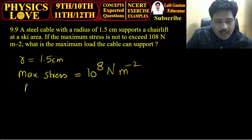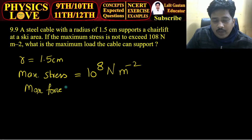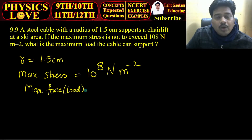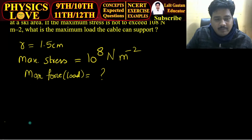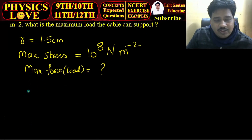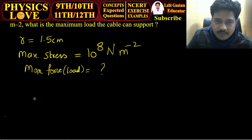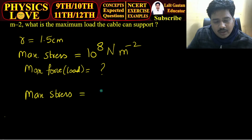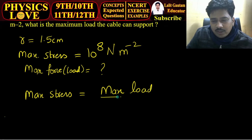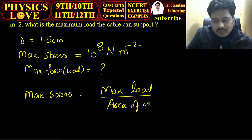We have to calculate the maximum load, that is, the maximum force. Since the wire is steel, the concept we use is: Stress is equal to force per unit area. So maximum stress is equal to maximum force — that is, maximum load — divided by the area of cross section.